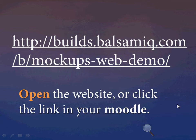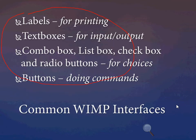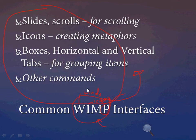Please look at the Moodle — all the things that you need for this lesson are there. Today we are going to review the common WIMP interfaces, which are labels, text boxes, combo boxes, list boxes, etc. We are going to use all of these WIMP interfaces — Windows, Icons, Mouse, and Pointers — to create our design.